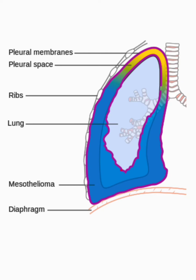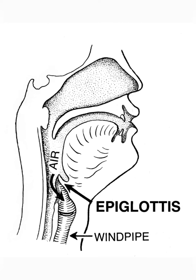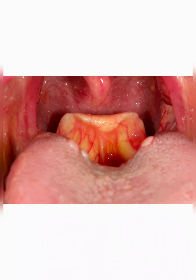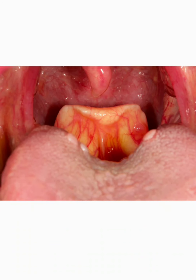Now let us learn about the epiglottis and passage of air. From the pharynx, food enters into the esophagus. We have a common passage for both air and food. The larynx is covered by the epiglottis, which is a muscular flap-like structure that prevents food from entering into the respiratory tract. The epiglottis closes whenever we swallow food, deflecting the food down into the stomach and keeping it out of the trachea. The epiglottis also opens more widely when we breathe in, allowing air to enter into the lungs.